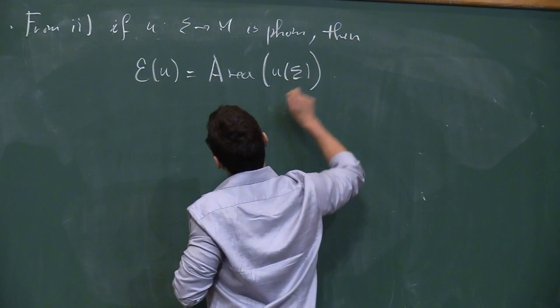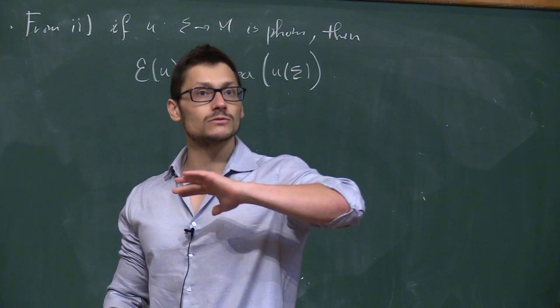From this equality in Wirtinger's inequality, if u is pseudo-holomorphic, then the energy of u equals the area of its image. And this area is topologically fixed if you look at maps with the same homology class as the image.